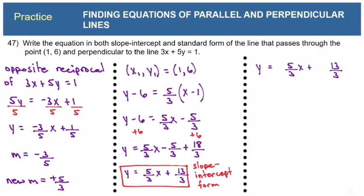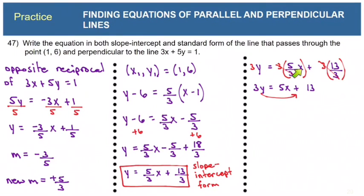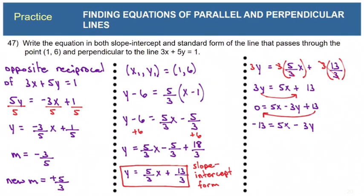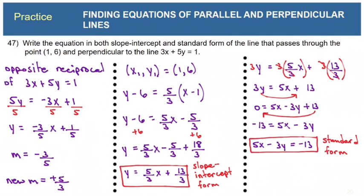To convert to standard form, multiply both sides by 3 to get integer coefficients. The 3s cancel, giving 3y equals 5x plus 13. To get standard form with x positive, I bring the 3y term to the right: 0 equals 5x minus 3y plus 13. Then bringing 13 to the left makes it negative, and rewriting with x and y on the left and the constant on the right gives 5x minus 3y equals negative 13 as our standard form.